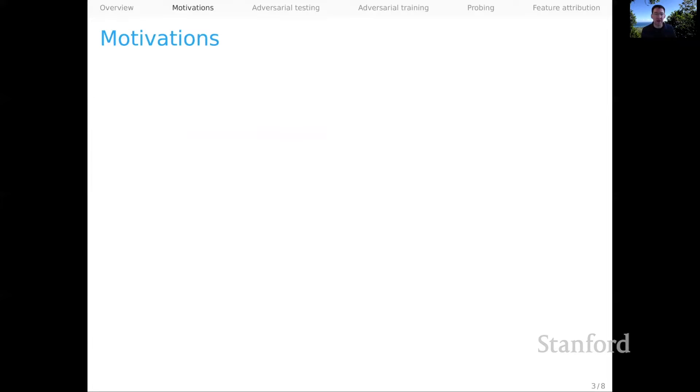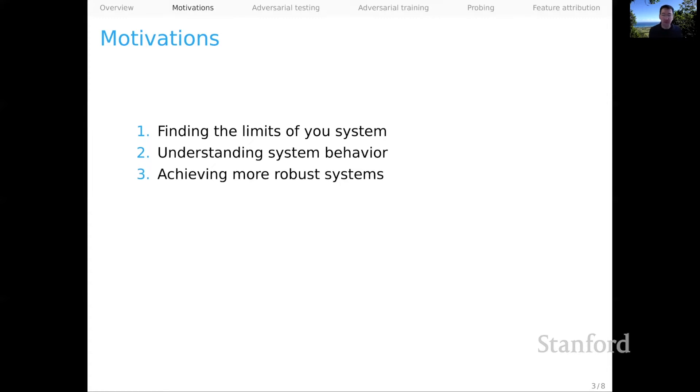The motivations for this are many. Here are just a few high-level ones oriented toward projects. The first is just that we might want to find the limits of the system you're developing. All our systems have limitations and finding them is always scientifically useful. We might also just want to understand your system's behavior better. What are its internal representations like and how are they feeding into its final predictions and overall behaviors? That's also just incredibly rewarding. And both of these things might feed into achieving more robust systems. To the extent that we can find weaknesses and understand behaviors, we can possibly take steps toward building even more robust systems.